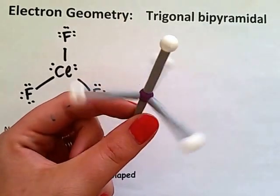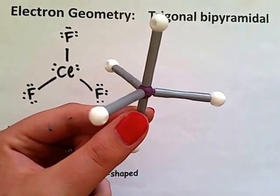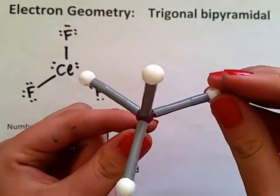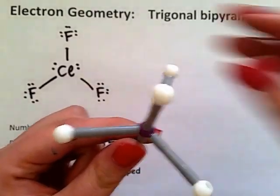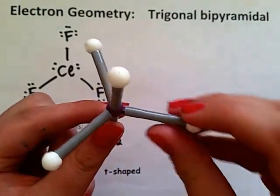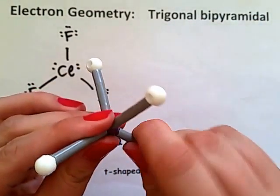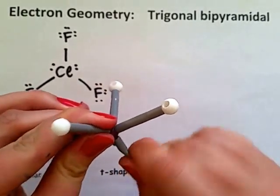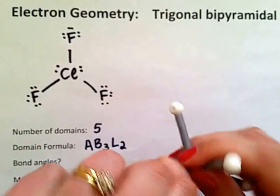Why do we do this? Because lone pairs are always placed on equatorial domains. In this case we have to put on two lone pair domains.